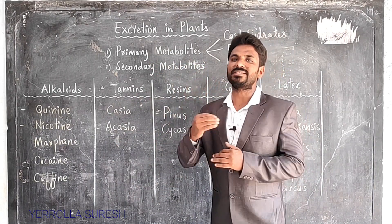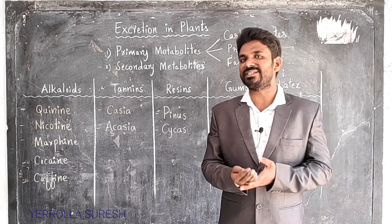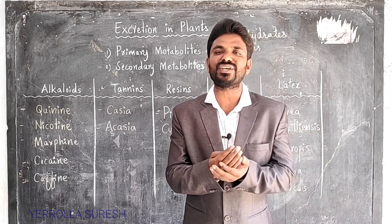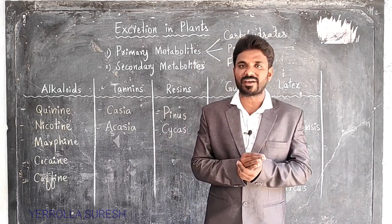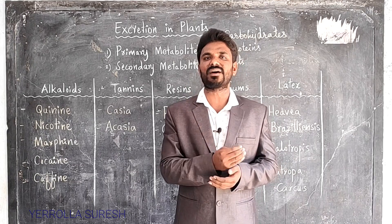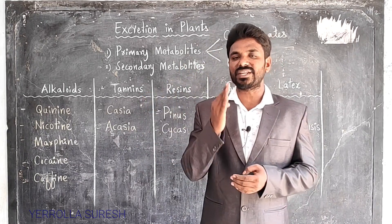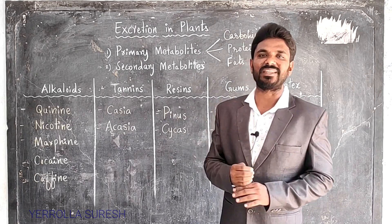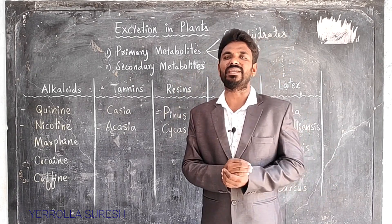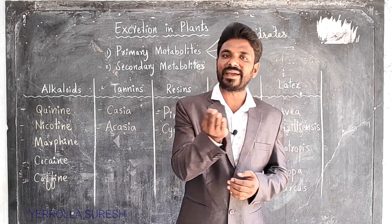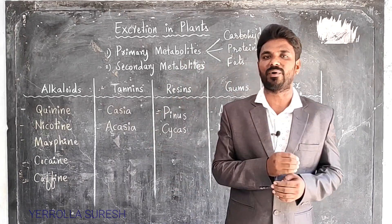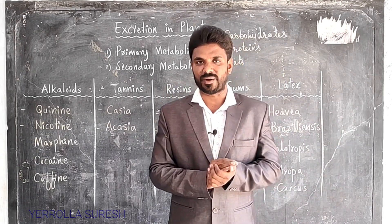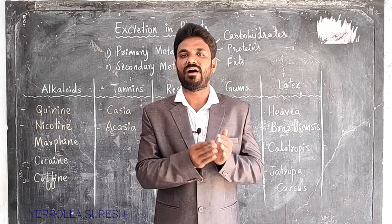Do plants excrete or not? Plants do excrete, but the excretion of plants is different from that of animals. Animals excrete waste material regularly because they have excretory organs, systems, or methods. In plants, excretion does not occur continuously. Plants do excrete waste material, but not regularly. During metabolism, many kinds of waste materials are formed and managed by the plant.